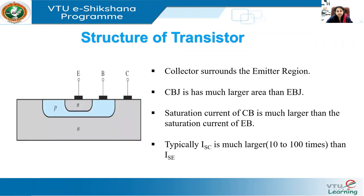Let's first see how the transistor structure looks in a real scenario. Observing the slide, you can see the structure for an NPN configuration with three terminals: the emitter, the base, and the collector. The emitter is surrounded by the N region, the base is surrounded by the P region, and the collector is surrounded by the N region. This is the NPN BJT transistor.